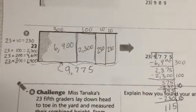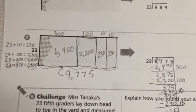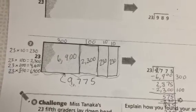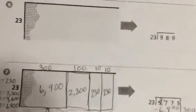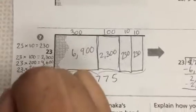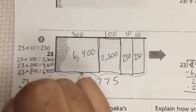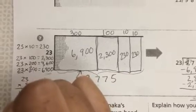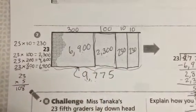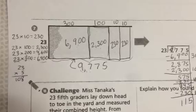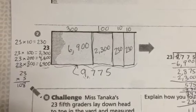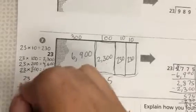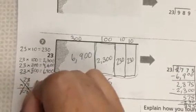Hmm, 10 is too big. Let me see, maybe let's try 23 times 5. 2 times 5, that's 10, 8. Is that right? No, it's not.